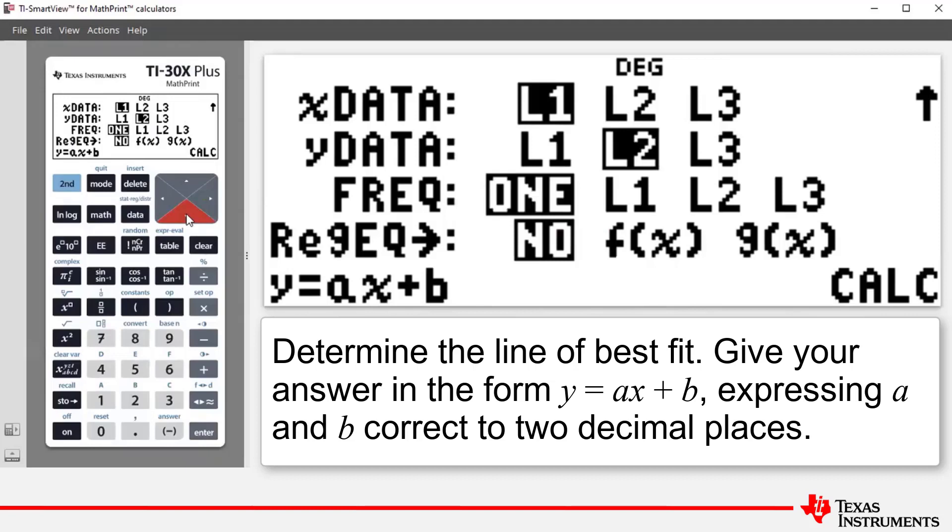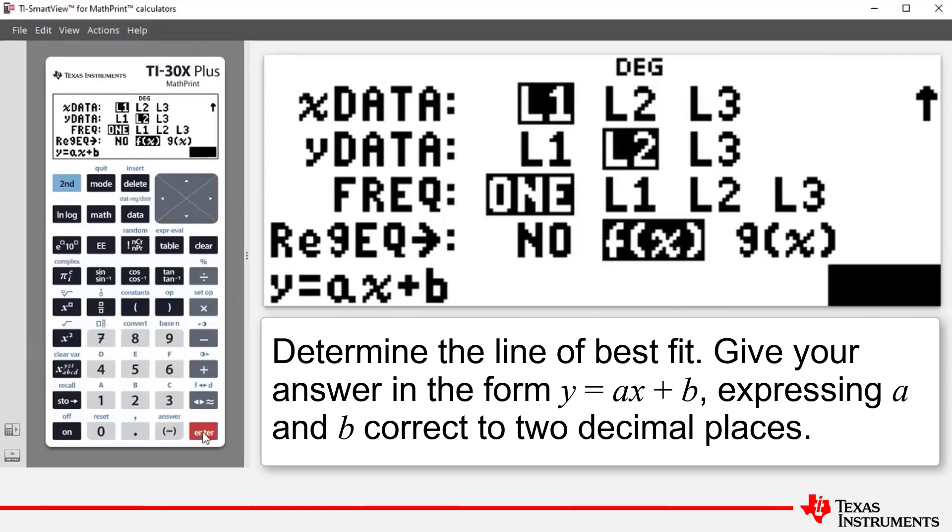So by pressing down each time, I've now got to regression equation. And we have an option here to store our regression equation if we use it. And we do need to use it in this example. So we press arrow to the right to highlight F of X. Press enter. And the cursor now goes to calc, which is short for calculate. Press enter.